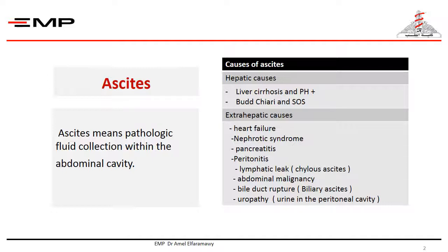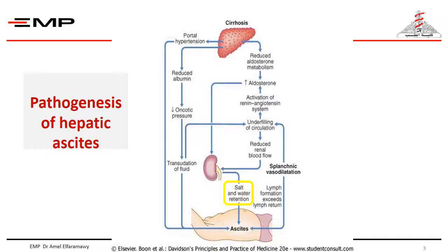It may be biliary ascitis in case of bile duct rupture, or urine in the peritoneal cavity in case of uropathy. Hepatic ascitis is caused by portal hypertension that leads to congestion and splanchnic vasodilatation, leading to transudation of fluids due to increased hydrostatic pressure.